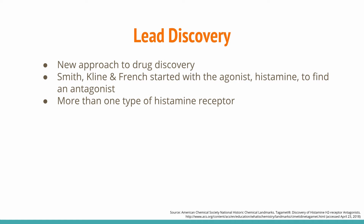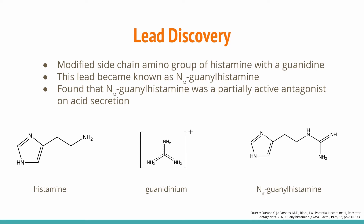This led the Smith, Klein, and French researchers to believe that there are two types of histamine receptors. They focused on the type that controlled gastric acid secretion, called H2 receptors, and wanted to find histamine antagonists that would selectively inhibit acid secretion. Using this new approach, Sir James Black and other researchers at Smith, Klein, and French started with the agonist histamine and modified the side-chain amino group.